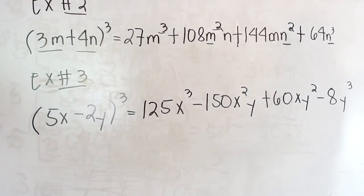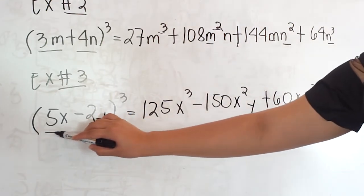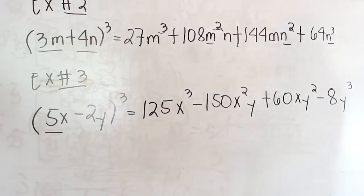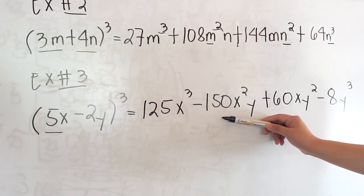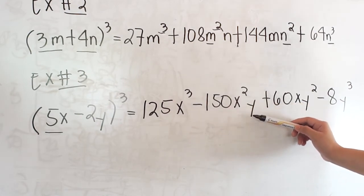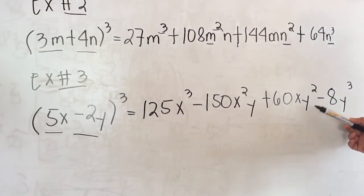The last example is (5x − 2y) cubed. Following the rules: first, cube the first term — 5x cubed is 125x cubed. Second, square the first term times the second term times 3, which results in 150x squared y. Third, square the second term times the first term times 3, which results in 60xy squared.